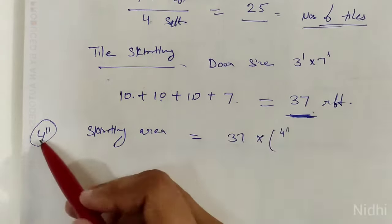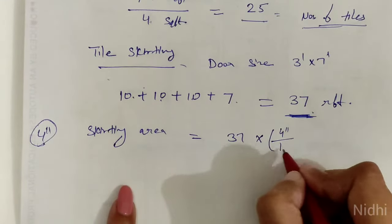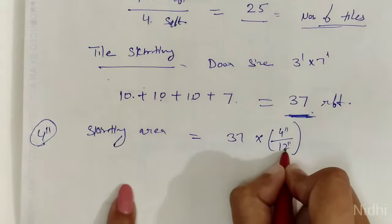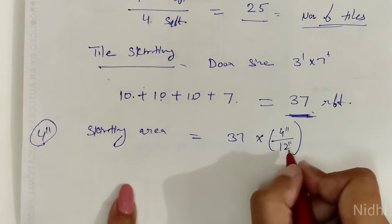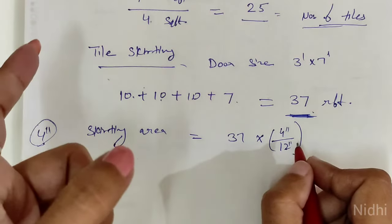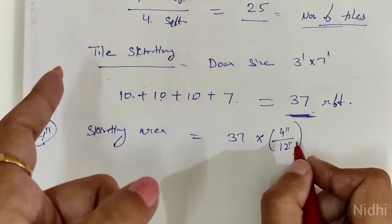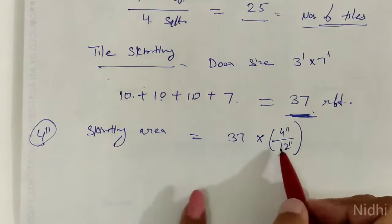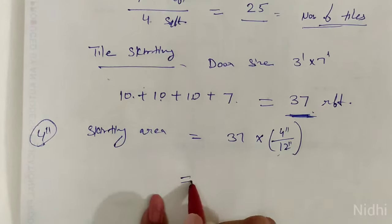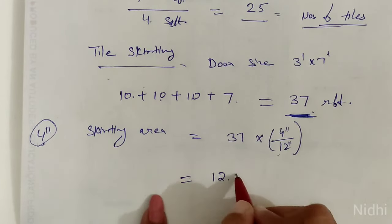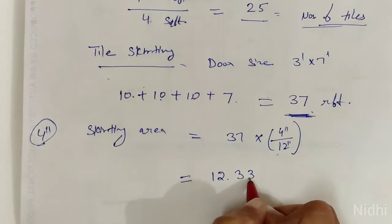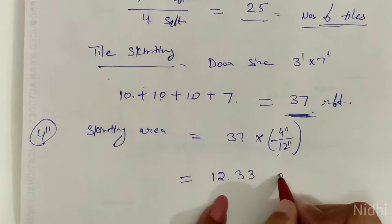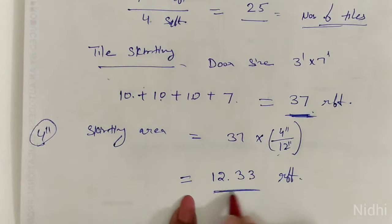4 inches divided by 12 inches, okay? Because this is 1 foot. 12 inches in 1 foot, so here we are using that 12 inches. So this is the answer, which is 12.33. This is our running feet area for skirting.